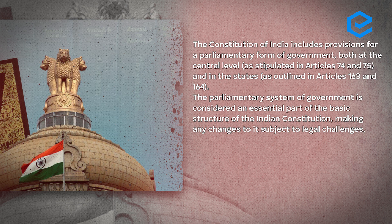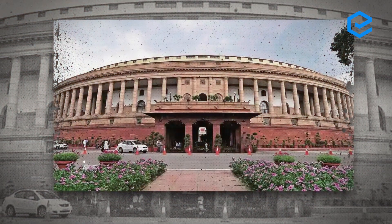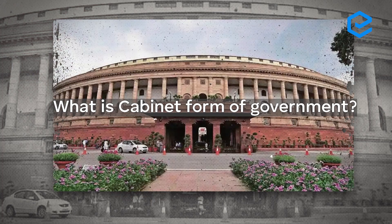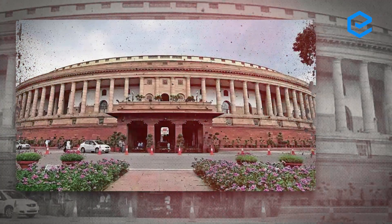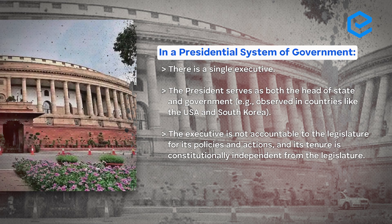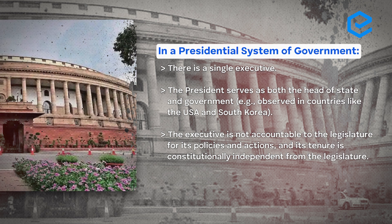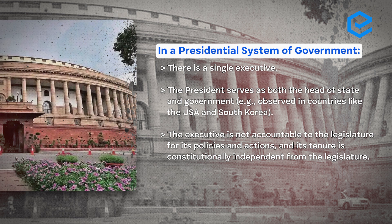The basic structure includes those parts without which the constitution cannot exist. Parliamentary form of government being a basic structure means we can never change it. Compare this with the presidential system of government which exists in the USA. Our system is parliamentary — also called the cabinet form of government. Be careful not to get confused by alternative names, as UPSC may frame questions using them. In a presidential system, there is a single executive; the president serves as both head of state and government. In India, the president's position is ceremonial; actual work is done by the Council of Ministers and the Prime Minister.